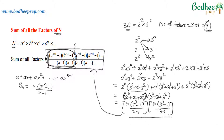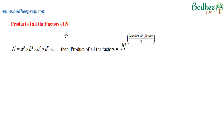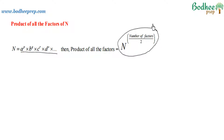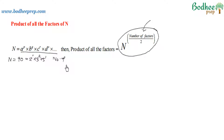Let's move to the next section: product of all the factors. If n is prime factorized in this way, then the product of all the factors of n is given by this formula. Let us understand with the help of an example. Let n equal 90. We know that 90 = 2 to the power 1 into 3 to the power 2 into 5 to the power 1. So the number of factors will be 2 into 3 into 2, which is 12. We have to get the product of all those 12 factors of 90.